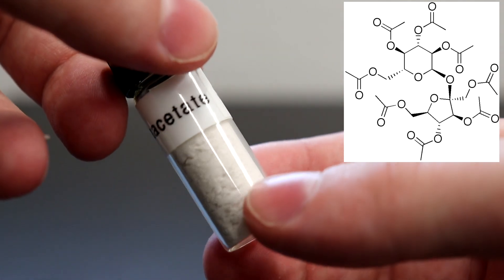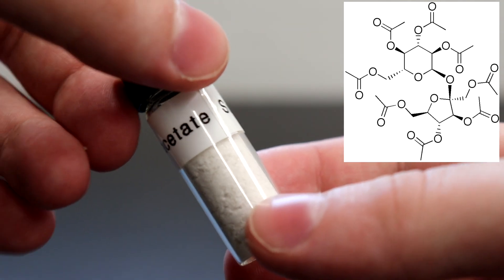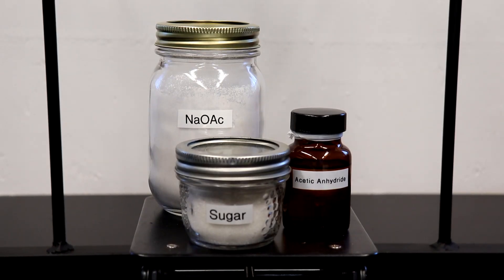In this video, we are going to be making the very bitter compound sucrose octa-acetate. This synthesis requires 2 grams of sucrose, which is just common table sugar, 1 gram of anhydrous sodium acetate, which is acting as our catalyst during this reaction, and 10 milliliters of acetic anhydride.